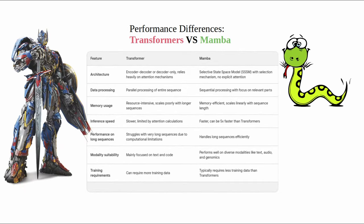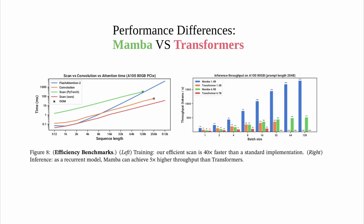This performance summary shows Mamba has achieved state-of-the-art results in language modeling tasks, matching or surpassing transformers in accuracy even with less training data.